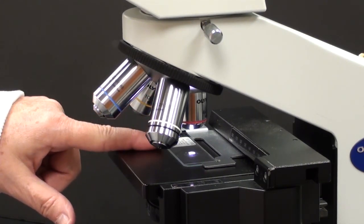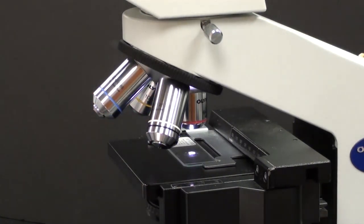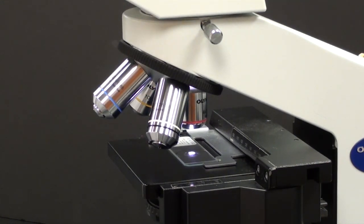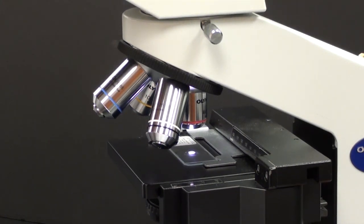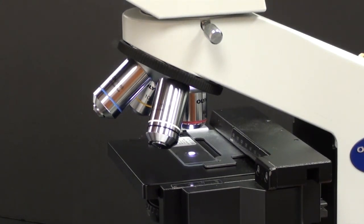I have placed the slide on the stage and I've taken the time to center the specimen over the light. What I need to do now is use the coarse focus knob, bringing the specimen almost into focus. I'm going to do a small amount of adjustment, making it perfect with the fine focus knob.